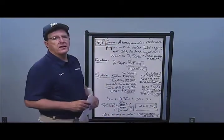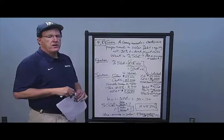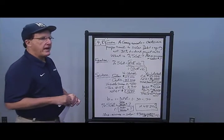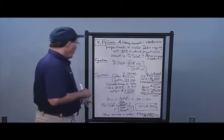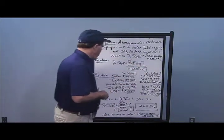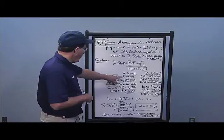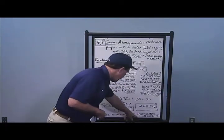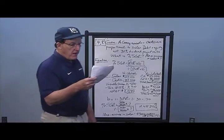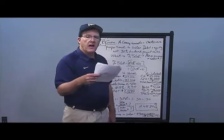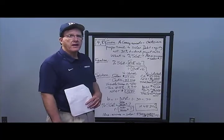SGR equals ROE (net income over equity) times b of 0.7, divided by one minus the numerator. Doing the math, I get an SGR of 10.482% — the maximum increase in sales with no new equity issued while maintaining the debt-to-equity ratio. The maximum increase in sales dollars is 10.482% times 49,000 of sales, giving a maximum sales increase of 5,136.17. That's your answer to problem number eight.